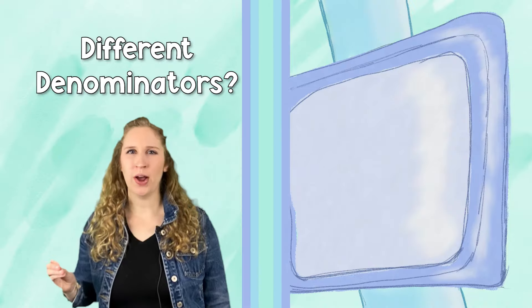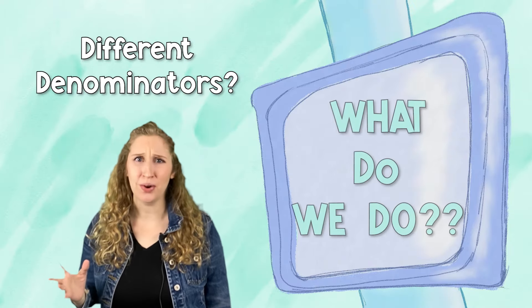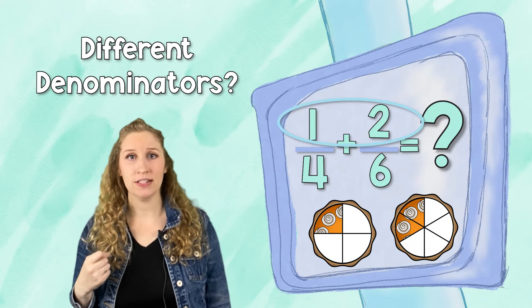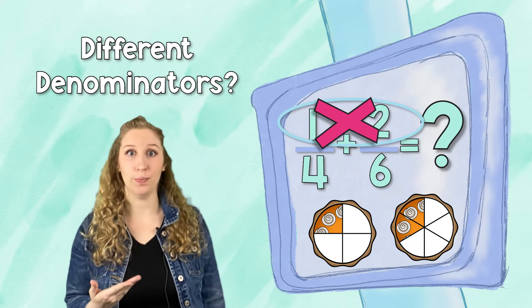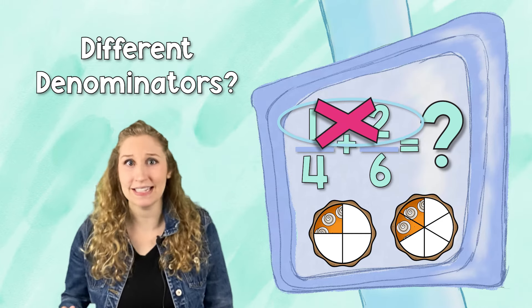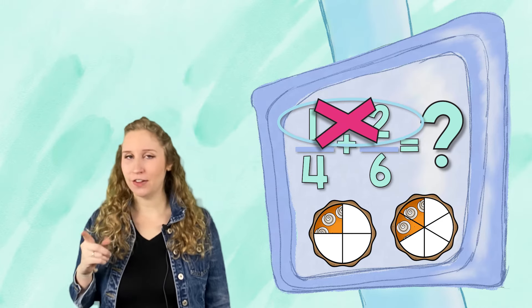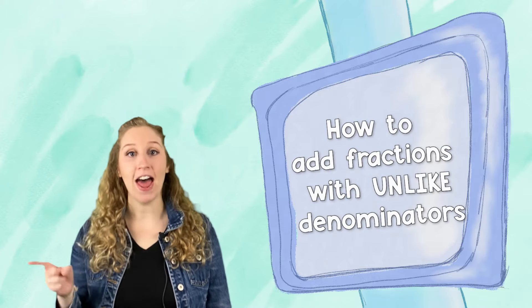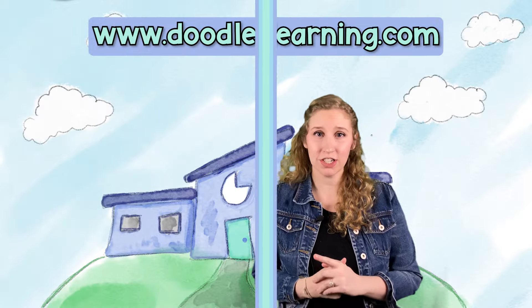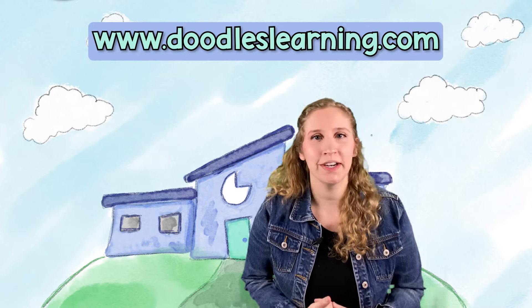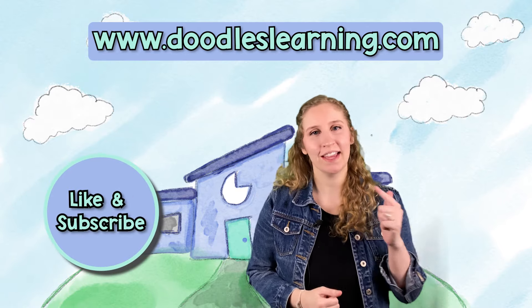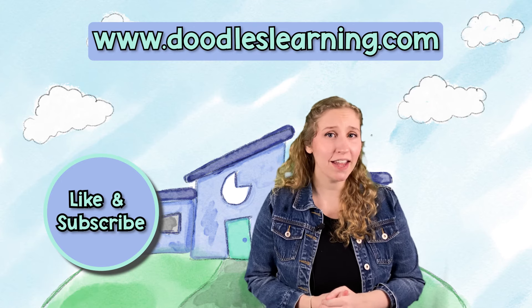So you might be wondering, what do we do if there are different denominators? Well, if you have different denominators, then you can't just simply add the numerators because the size of the piece is different. Follow along for another video I'm going to be doing on this soon about how to add fractions with unlike denominators. Have questions? Feel free to go to doodleslearning.com to learn more. If you enjoyed this video, make sure you like and subscribe so you stay up to date on all the latest ways to make math visual.